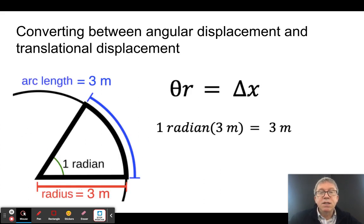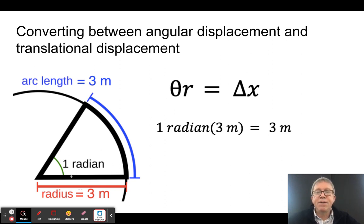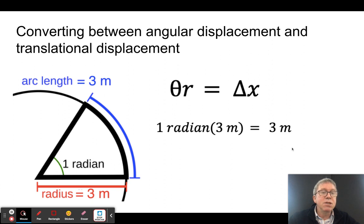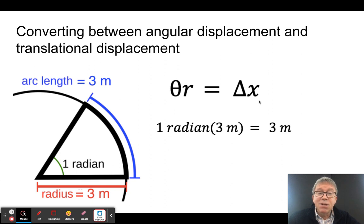The reason we want to use radians is because it makes it really easy to convert between angular and translational measurements. If I have a radius of three meters, then an angle of one radian would have an arc length of three meters. What that means is theta times r equals delta x. So one radian with a radius of three meters means the translational displacement is three meters. This is going to be true for all parts of rotational kinematics.